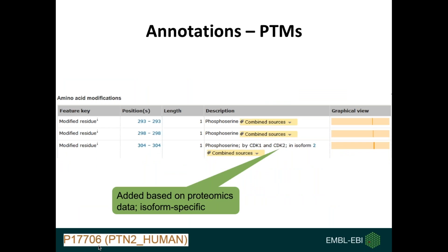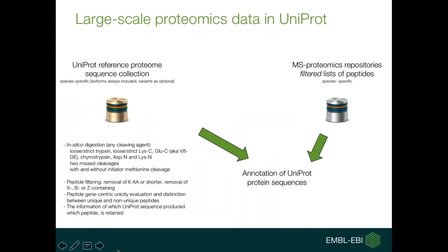Proteomics data can provide a similar kind of annotation. In this example, which is from another human sequence, we see a PTM annotated onto a sequence telling us that a serine residue at position 304 is phosphorylated specifically in isoform 2, and that is data taken from proteomics experiments — in this case, isoform-specific annotation.